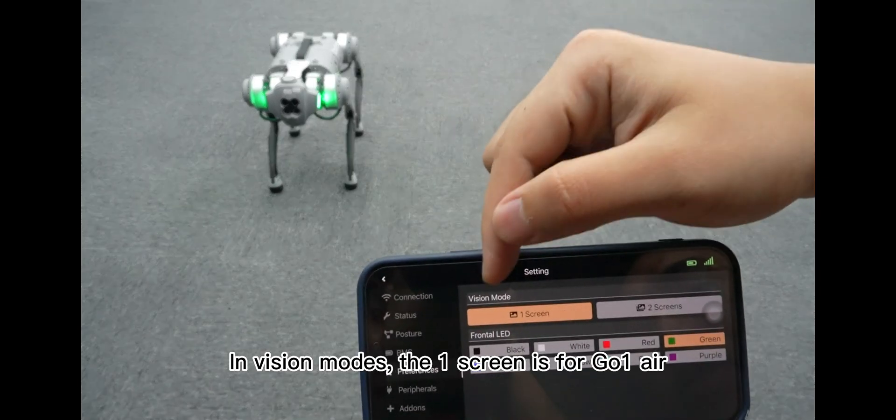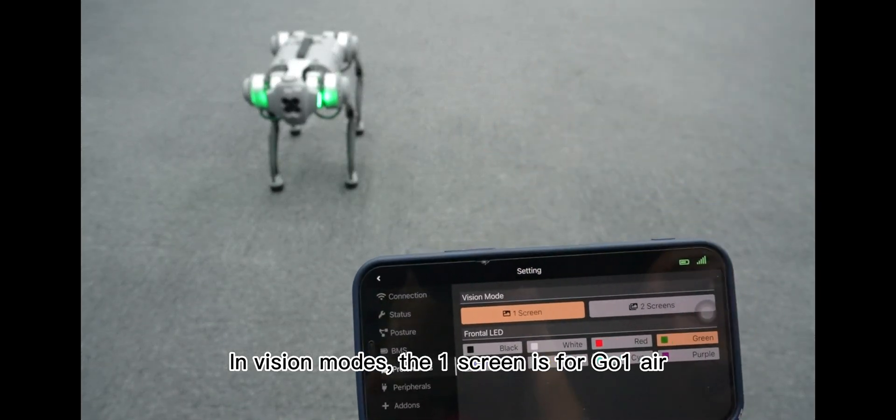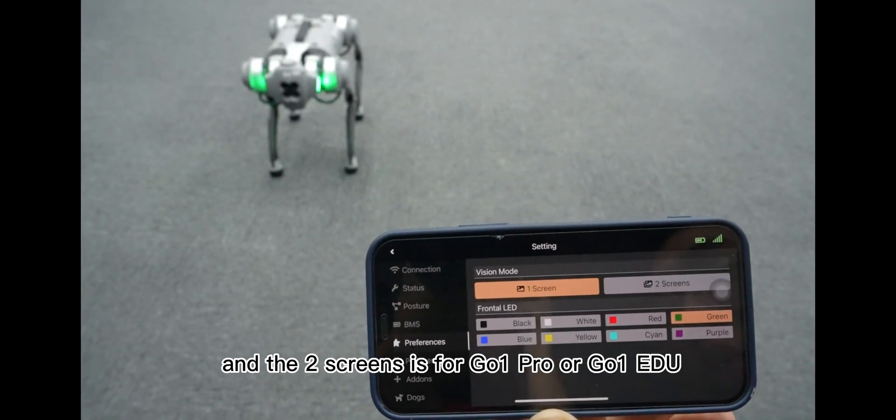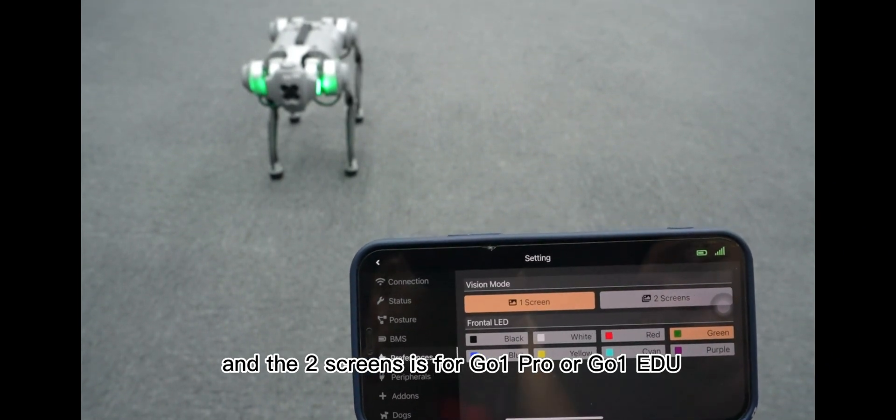And in vision modes, the one screen is for Go 1 Air, and the two screens is for Go 1 Pro, or Go 1 EDU.